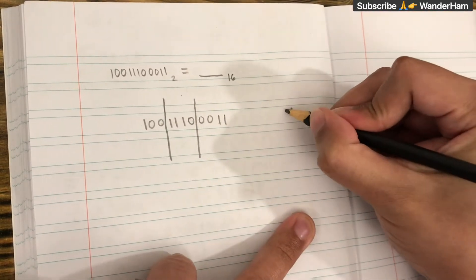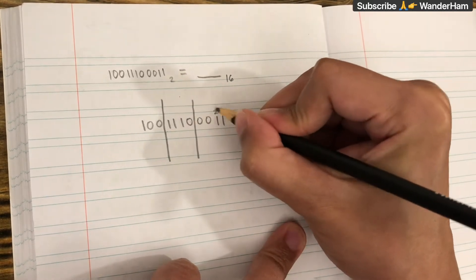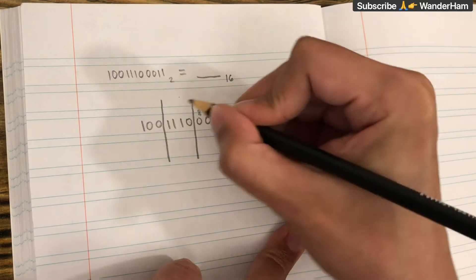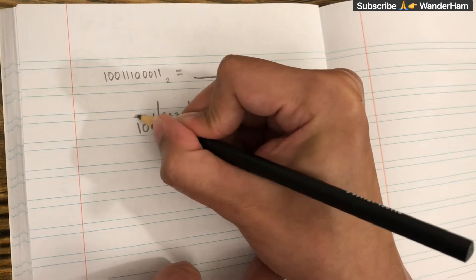And now our values would be 1, 2, 4, 8. So 1, 2, 4, 8. 1, 2, 4, 8. 1, 2, 4.